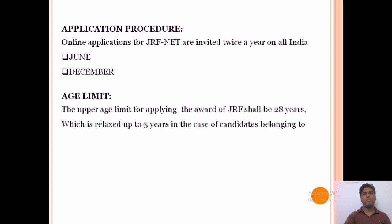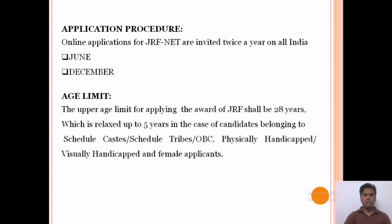Regarding the application procedure for UGC CSIR NET: online applications are invited twice a year on an all-India basis, in the months of June and December. On age limit: the upper age limit for applying for the award of JRF shall be 28 years, which is relaxed by up to 5 years for candidates belonging to SC, ST, OBC, or physically handicapped or visually handicapped categories, or female applicants.